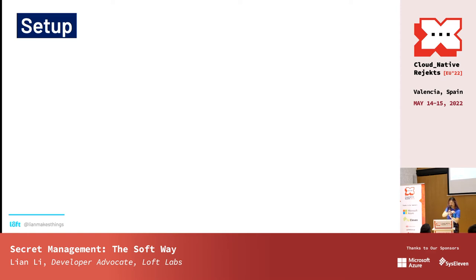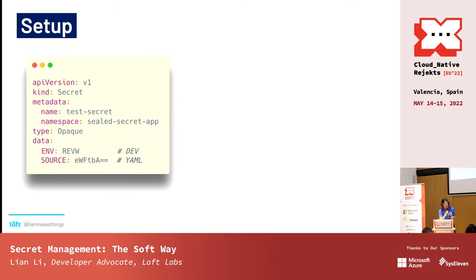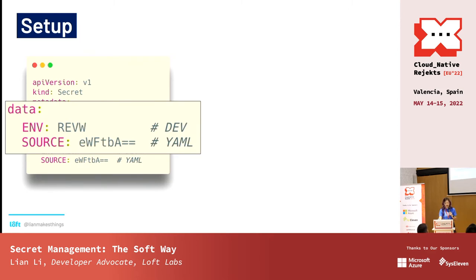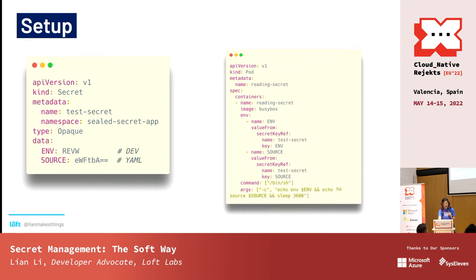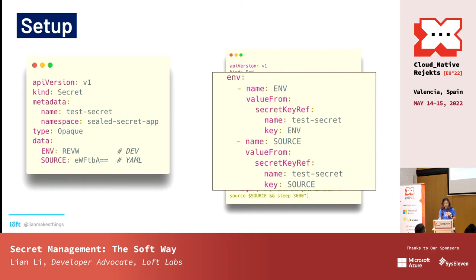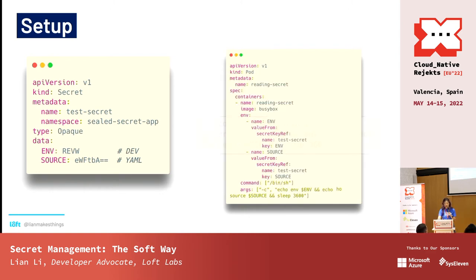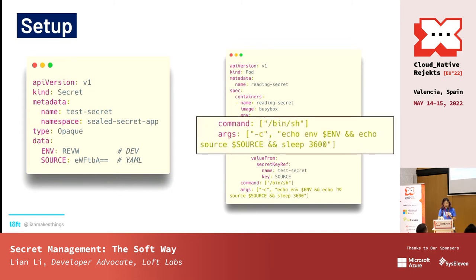Let's look at the setup I've created to explore solutions. We want to end up with a secret that has two properties: one is the environment, which can be dev or prod, and one is the source, which in this case is YAML. To consume the secret, we'll have a pod that mounts the secret contents into the environment and echoes it — just to prove we're consuming it. The key point is I'm using this exact same pod across all environments with no other configuration changes.